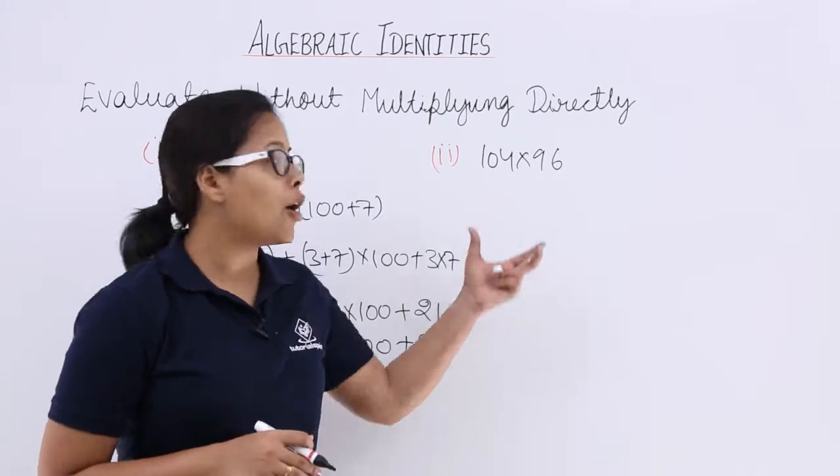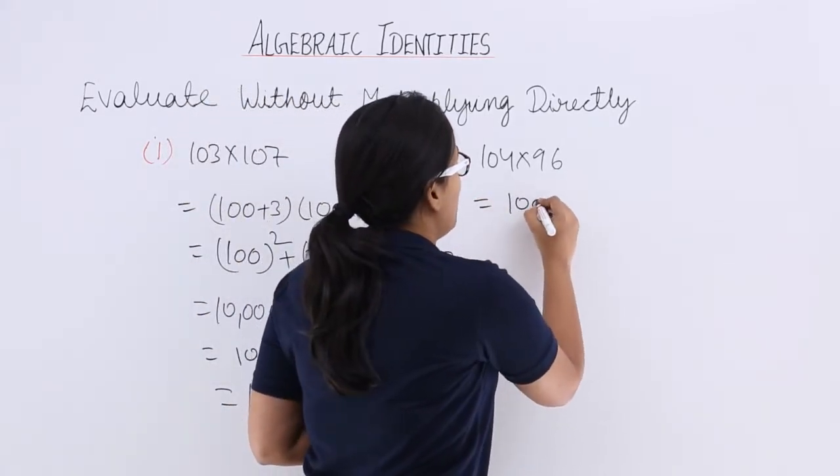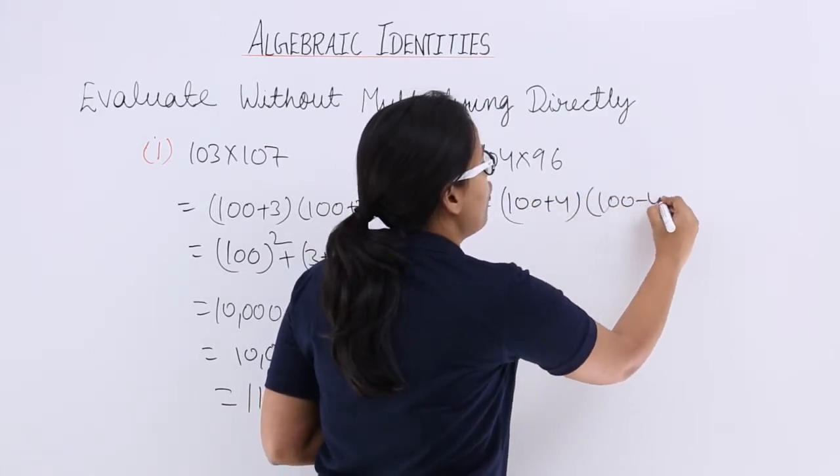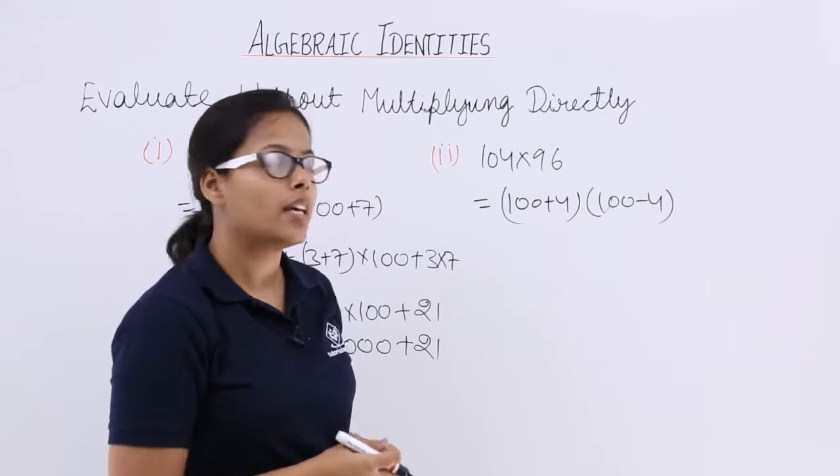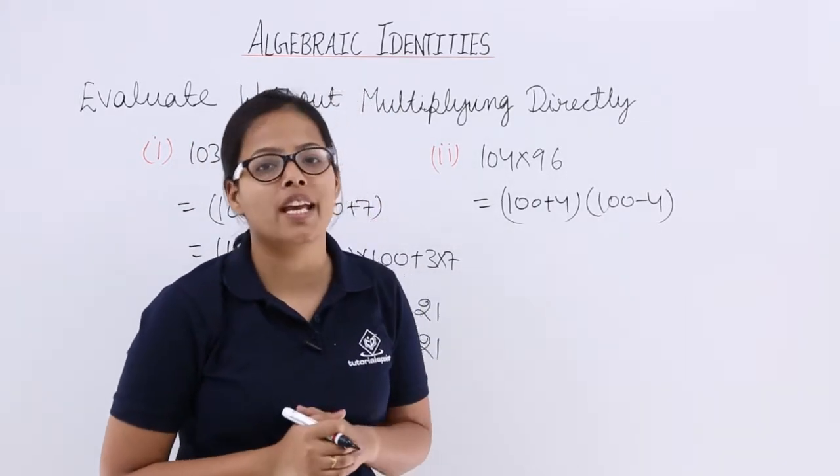So now let's take our second question which is 104 times 96. How can you write this? You can write this as 100 plus 4 and 100 minus 4. Let's go back and see how this expression exactly looks like.